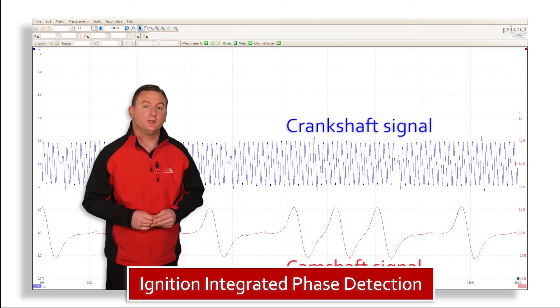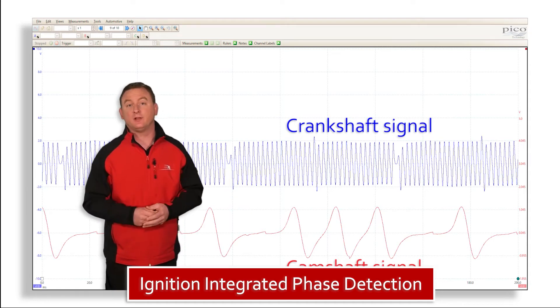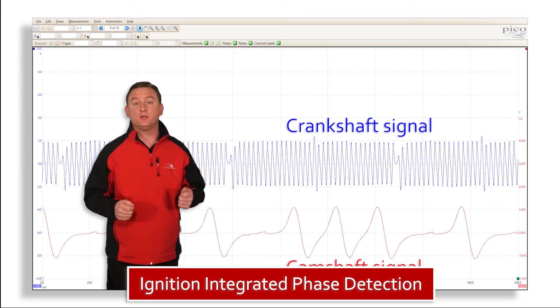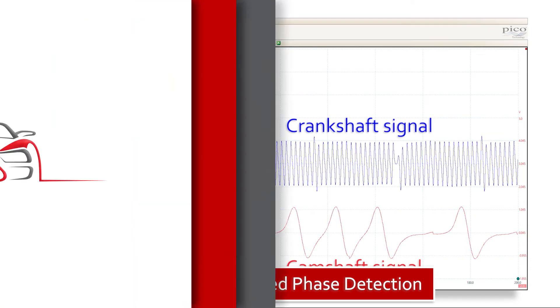This allows the engine control unit to determine not only when cylinder number one is on compression, but also the amount of deflection or valve overlap when using variable valve timing.